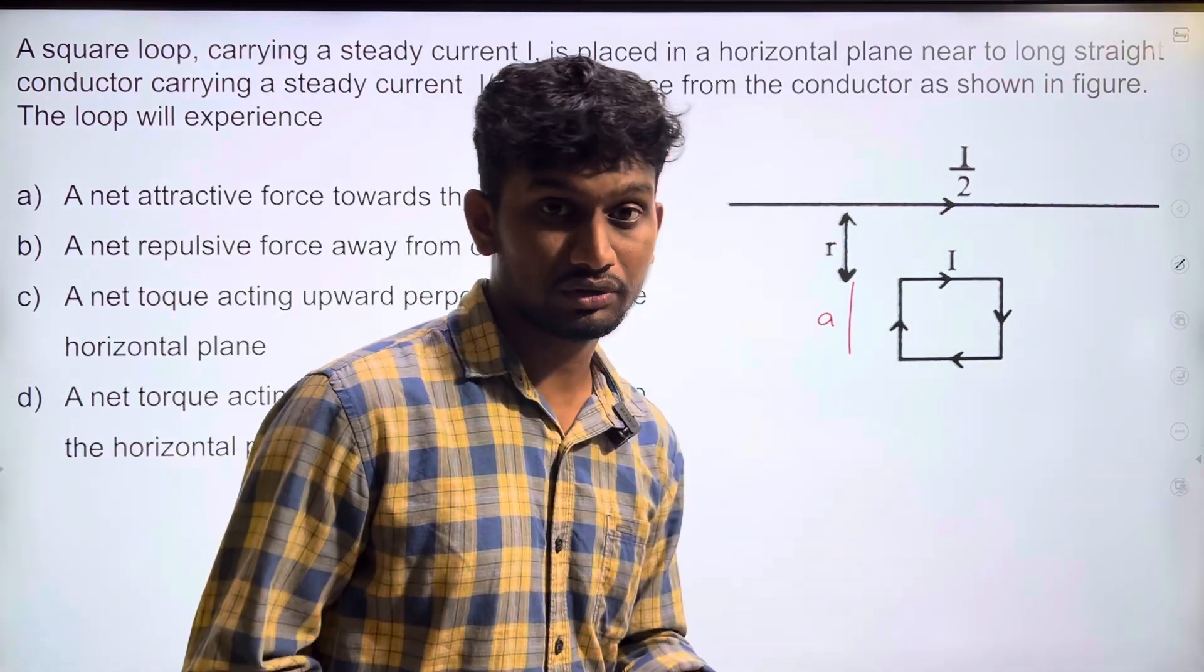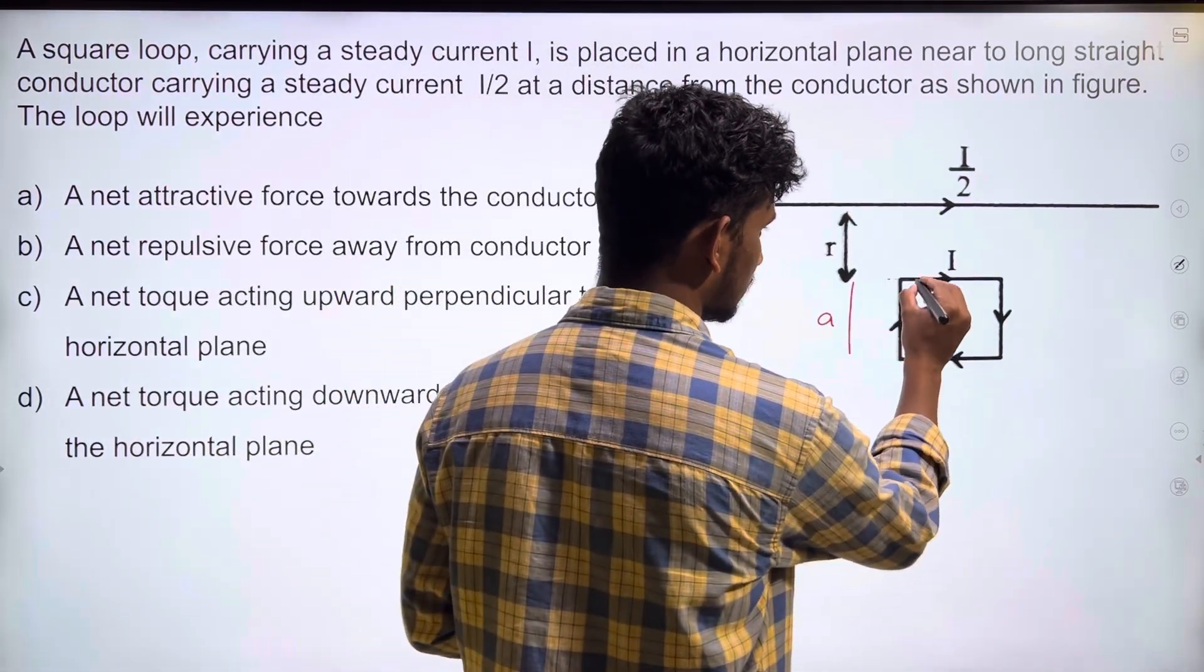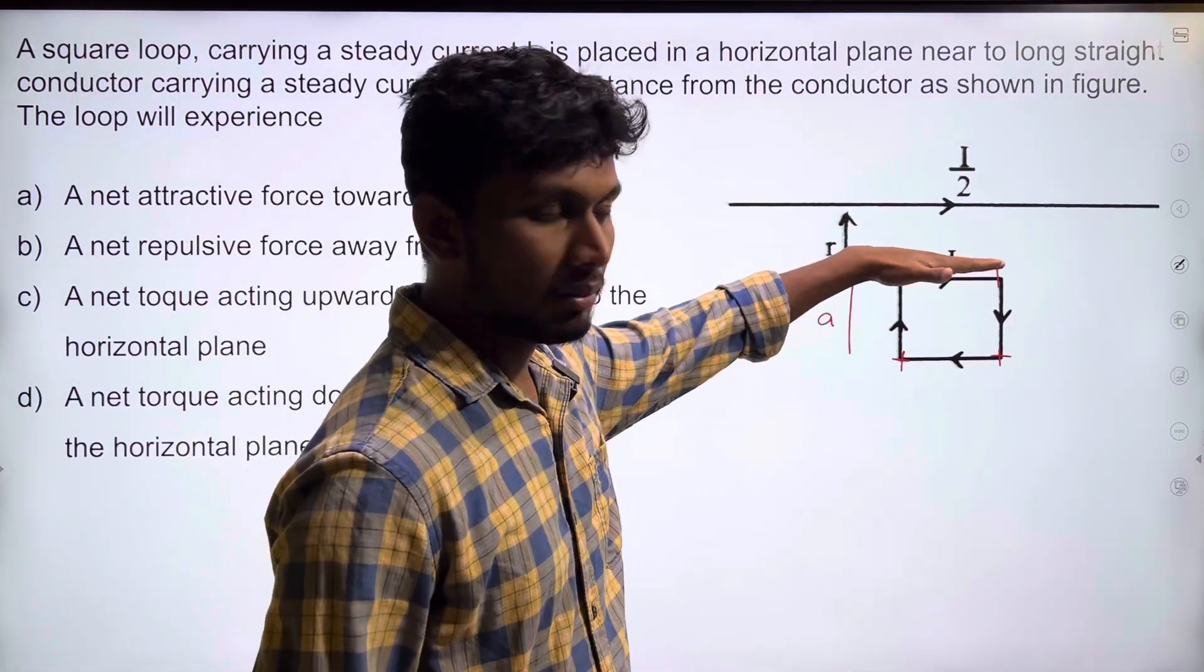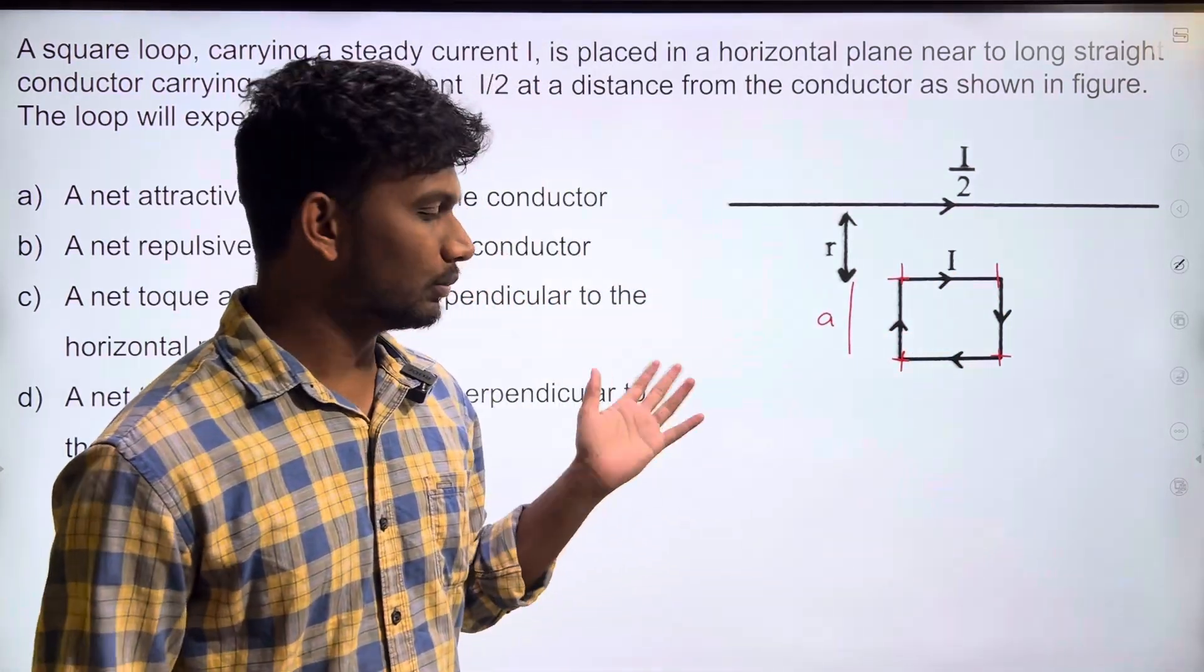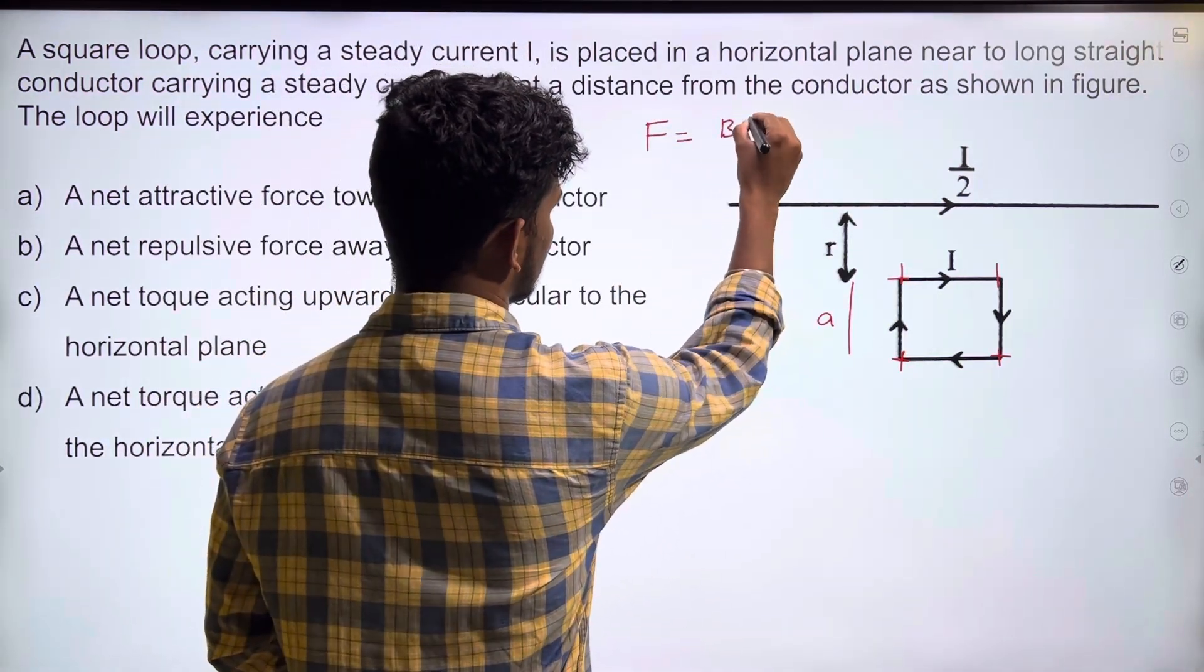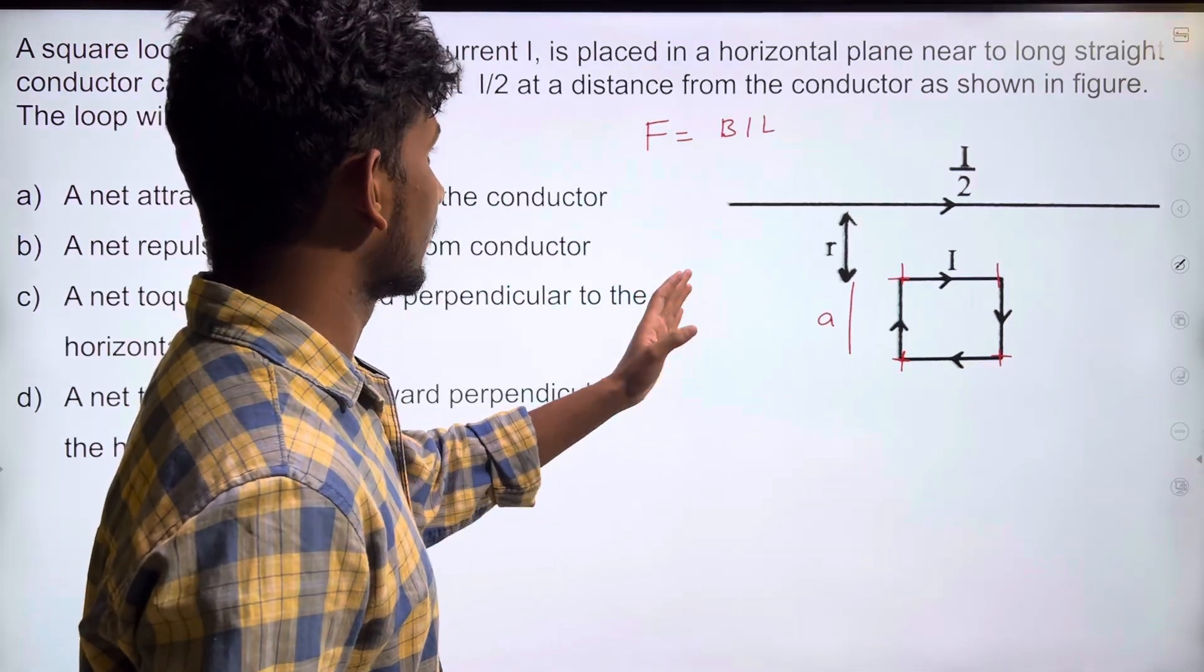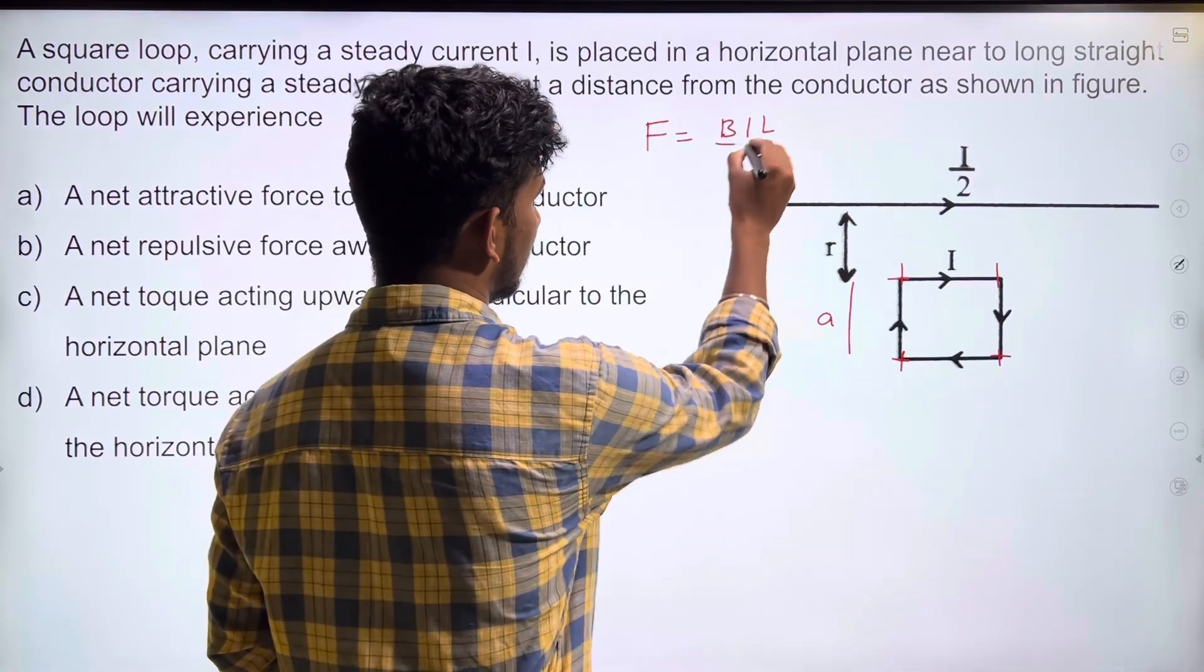As we know, magnetic force acts on conductors. If the conductors of the square loop are considered, when you look at each individual side - conductor one, conductor two, conductor three, conductor four - we need to find the magnetic force. The formula is F = BIL. For directions, we use the left-hand rule.